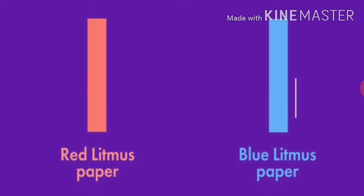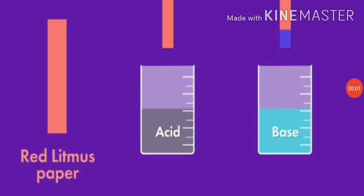Liquid litmus and litmus paper are used to detect the acidic or basic nature of a substance. We can test acidic or basic solutions by the help of litmus paper. Red litmus paper turns blue when dipped in basic solution, while in acidic solution, red litmus paper remains red — no color change.